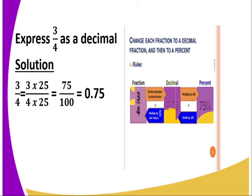We are required to express 3 over 4 as a decimal — that is, 3 quarters as a decimal. What you normally do is identify a common factor whereby you multiply both. Our common factor here is 25, so we multiply the numerator by 25 and also the denominator 4 by 25. We get 75 over 100, and when we divide 75 by 100, we get 0.75. So 3 quarters as a decimal is 0.75.